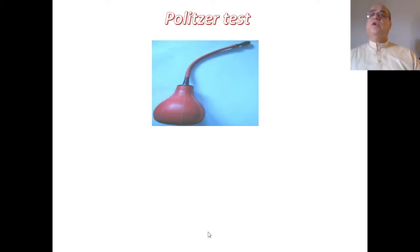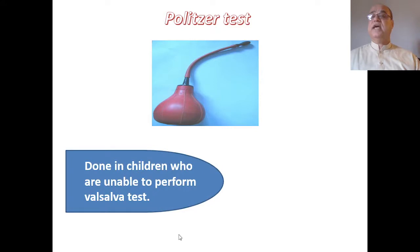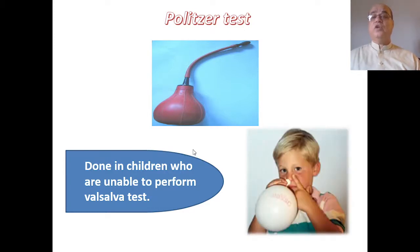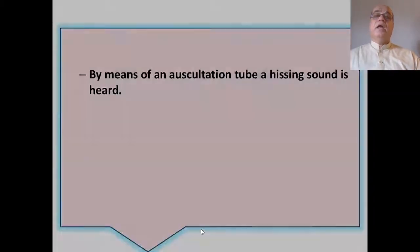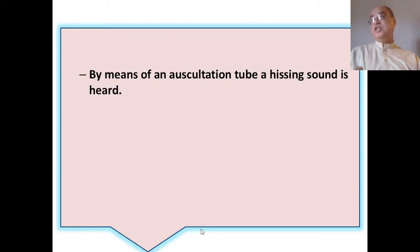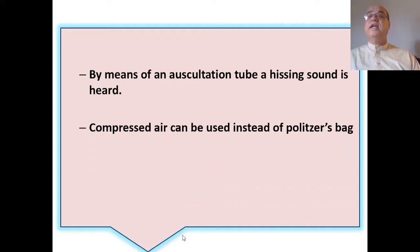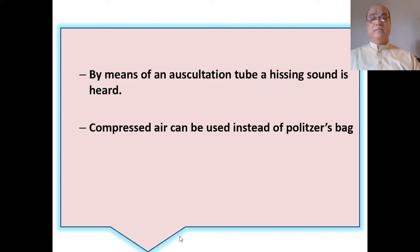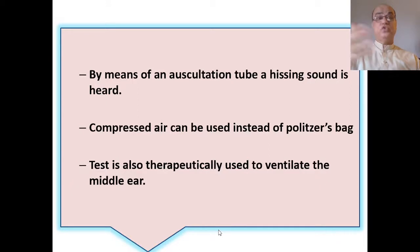Another test is Politzer's test, which uses a balloon instrument with an olive-shaped tip introduced into one nostril on the side to be tested. It is usually done in children who are unable to perform Valsalva. The other nostril is closed, and the bag is compressed while the patient swallows. Movement of the tympanic membrane is assessed; through an auscultation tube, a hissing sound is heard. This test is also therapeutically used to ventilate the middle ear.